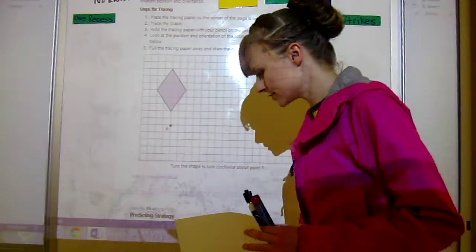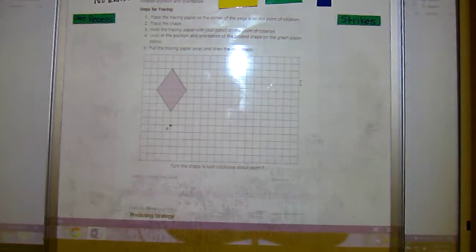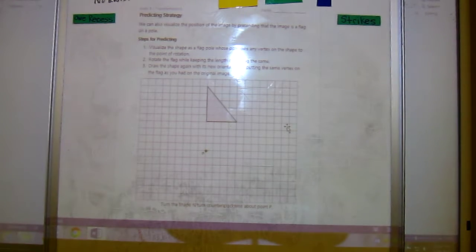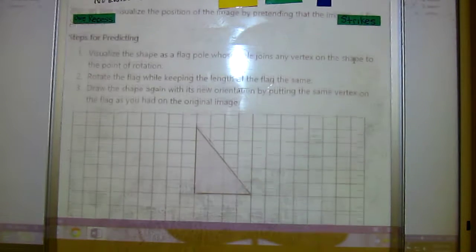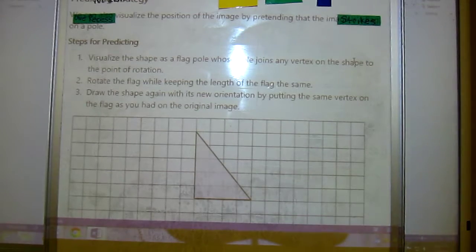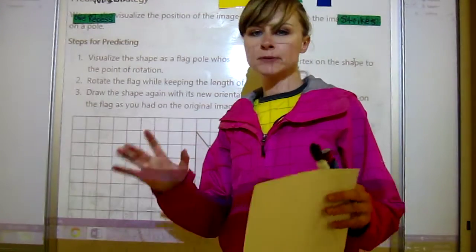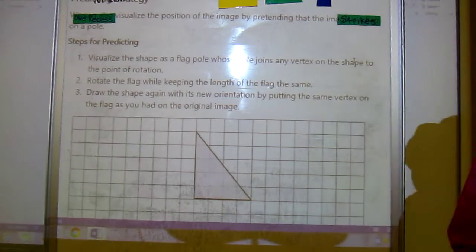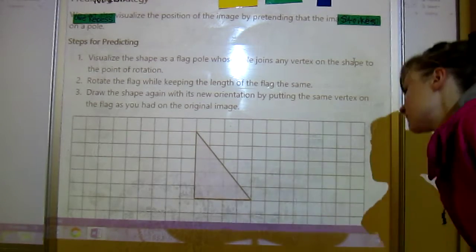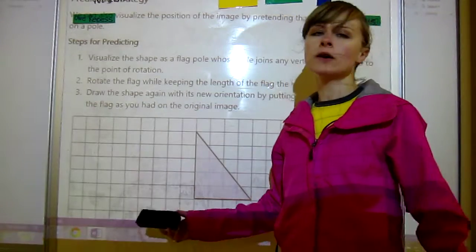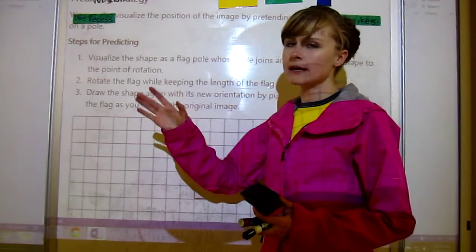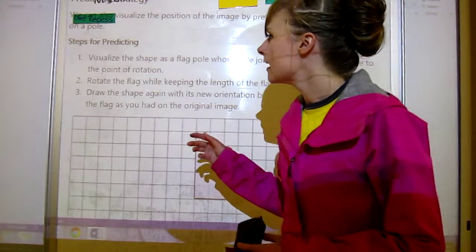Now there's another strategy and it's called predicting. It includes visualizing, so you want to visualize the position of the image by pretending that the image is on a pole, like a flagpole. It doesn't work for all shapes, but sometimes it does work.